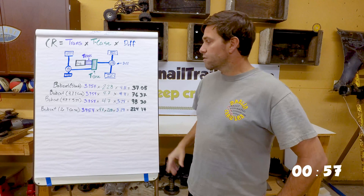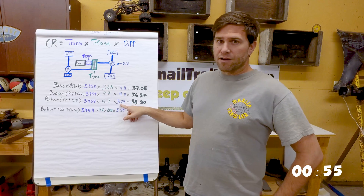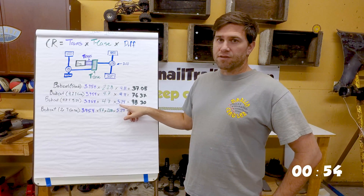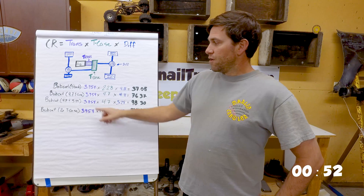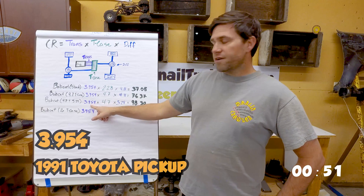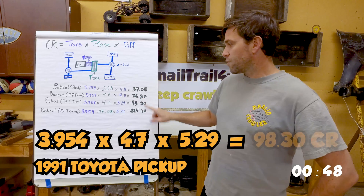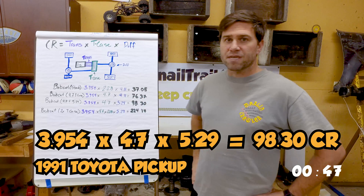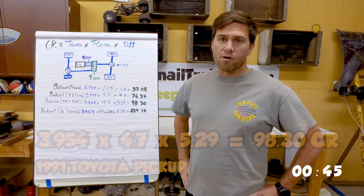What else can we do? Well, if we go larger tires like 37s and you're running 5.29s, with the stock first gear, the 4.7 t-case, and 5.29s, we're bumping ourselves up to 98.30.